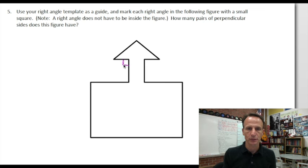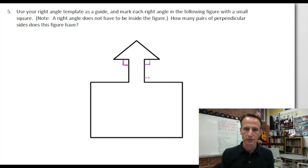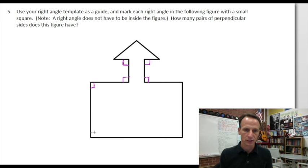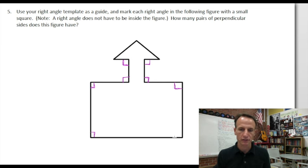That's a right angle — marking it with a small square. That's a right angle, obviously. And then here — see the right angle there? And then inside this rectangular figure, obviously all four corners are right angles. Or I should be precise and say they appear to be — we're not measuring them, although you kind of are by using your right angle template as a guide.